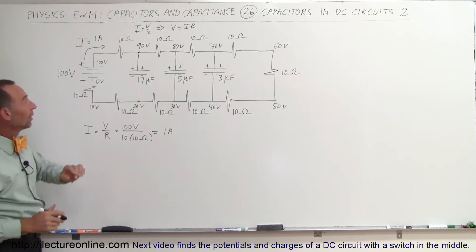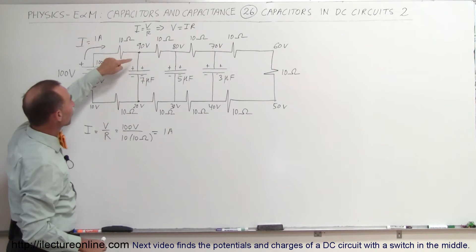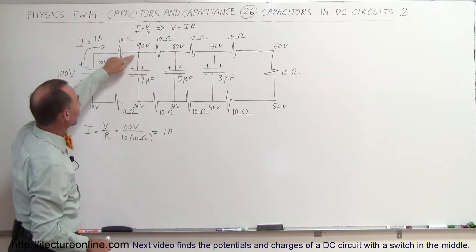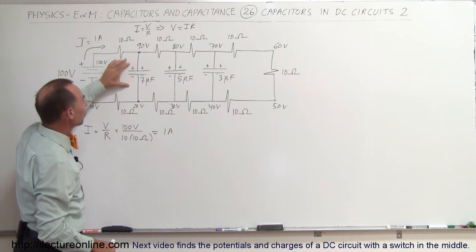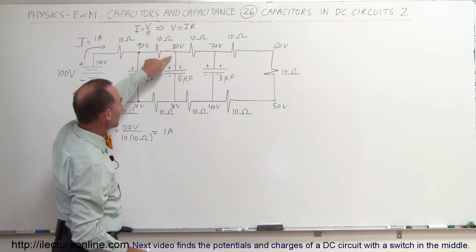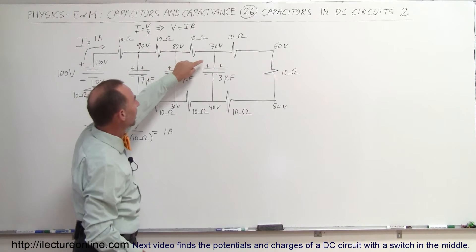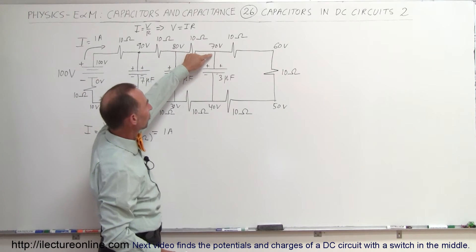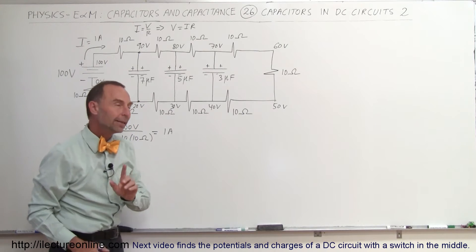So now we notice that the potential difference across the first capacitor is 90 minus 20, or 70 volts. The potential difference across the second is 80 minus 30, which is 50 volts. And the potential difference across the third is 70 minus 40, or 30 volts.